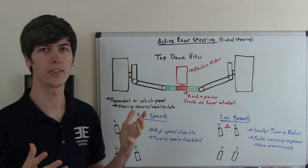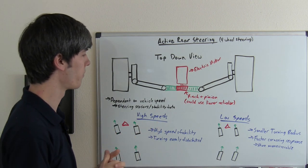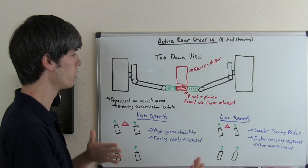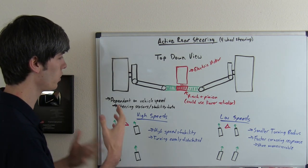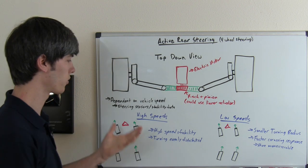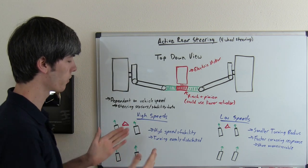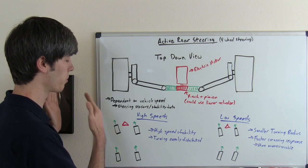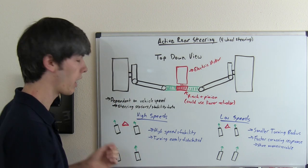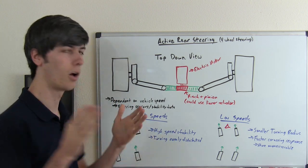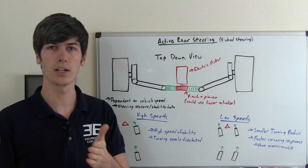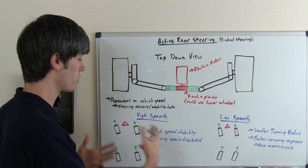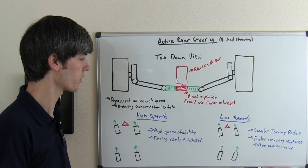This type of system is dependent on vehicle speed and will read from various sensors, such as steering sensors or stability information, to determine what to do when you're steering. You can break it down between high speeds and low speeds. When the vehicle is traveling at high speeds, all four wheels will turn the same direction in order to have greater stability. So if you're on the highway merging lanes and you turn the wheel a little bit, all four wheels will turn that direction and you'll have a nice smooth stable merge.